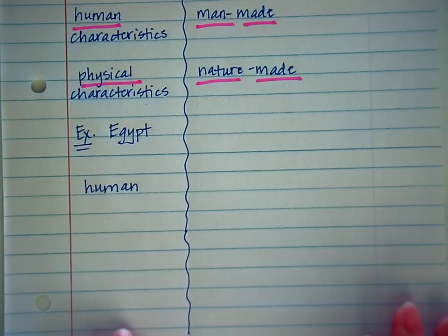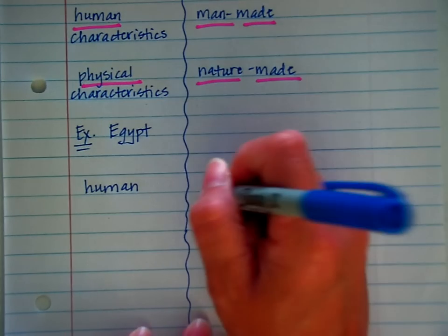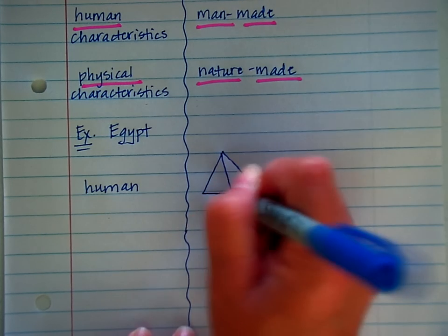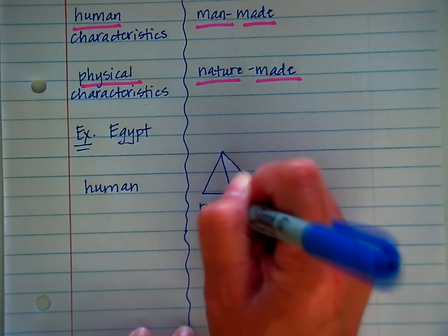So some examples that you may have drawn for human things that are man-made for Egypt, maybe the pyramids.